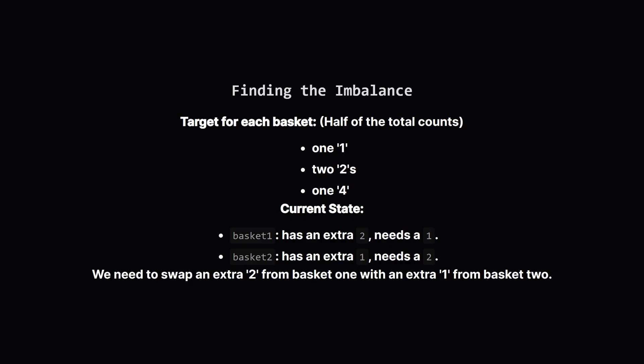So, since we know a solution exists, we also know what the final perfect state of each basket should be. Each basket must end up with exactly half of the total fruits. That means each basket needs one one, two twos, and one four. Now we can see the imbalance clearly. Basket one has an extra two and is missing a one. Basket two is the mirror opposite. It has an extra one and is missing a two. The problem now is just to fix this imbalance.